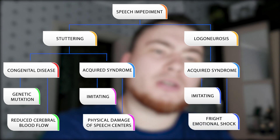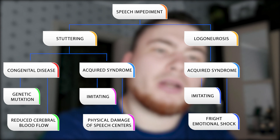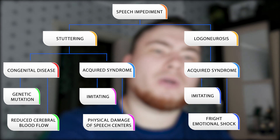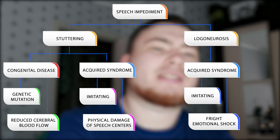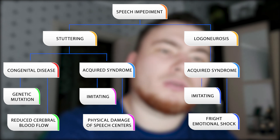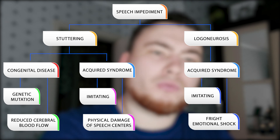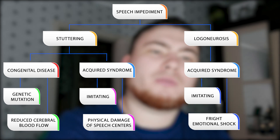A person can also acquire logoneurosis after a big fright or emotional stress. After a fright, a person's larynx gets shut and they are unable to speak; the body memorizes this and logoneurosis becomes part of the person's speech. Every time they try to say something, they experience either a spasm or a block. This kind of logoneurosis is completely curable.